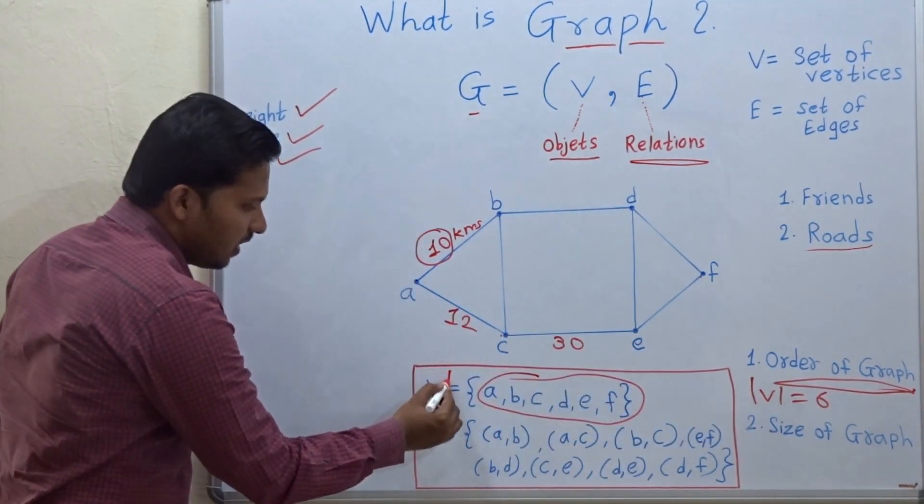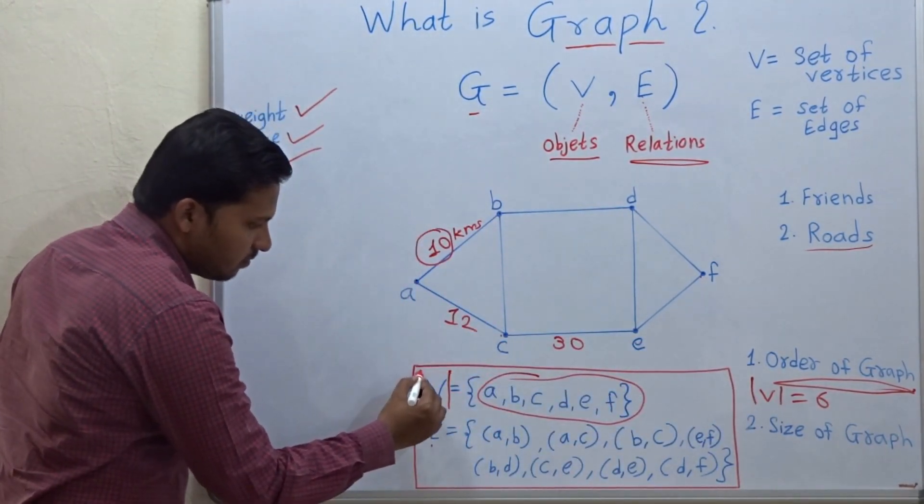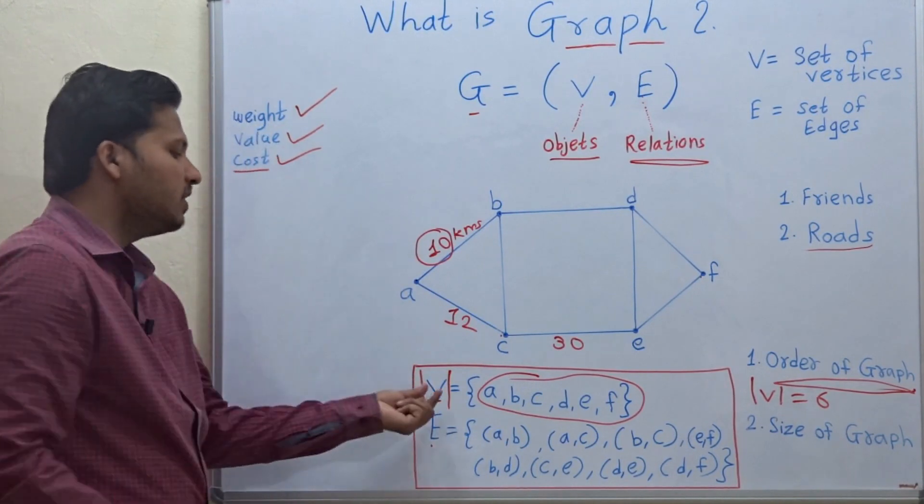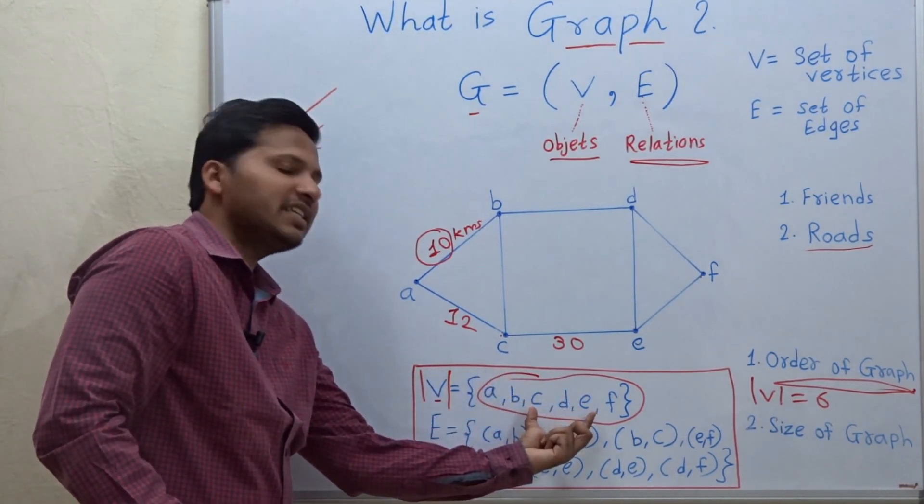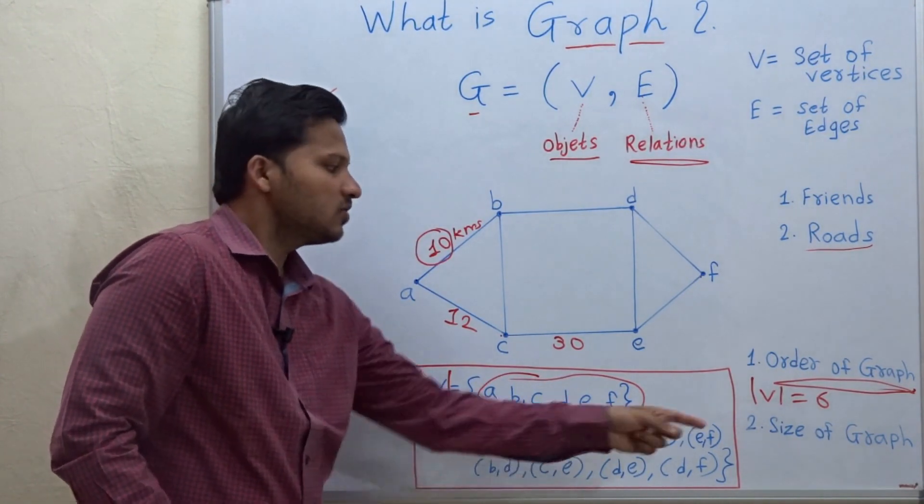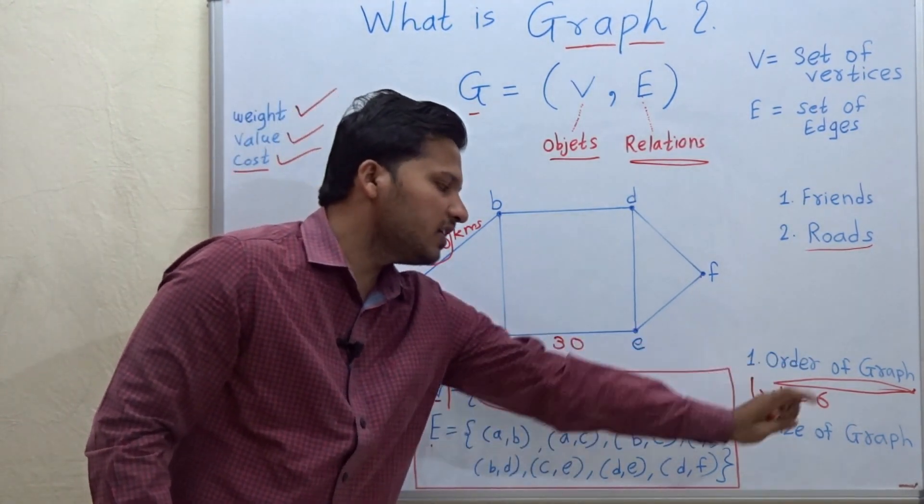This is the V. And if you take modulus of V, that means you are finding out the number of elements present in this set. So that is the order of graph and that is 6.